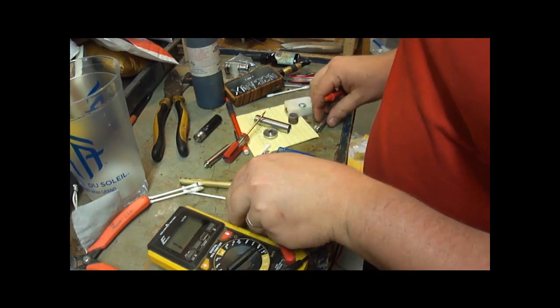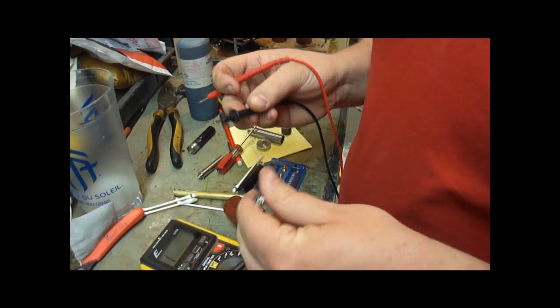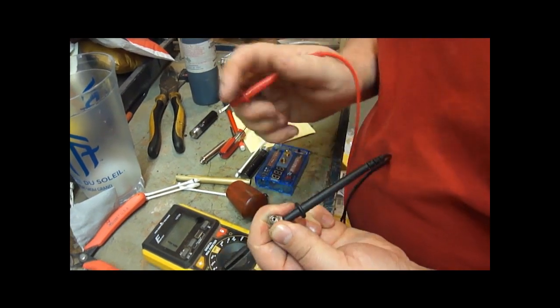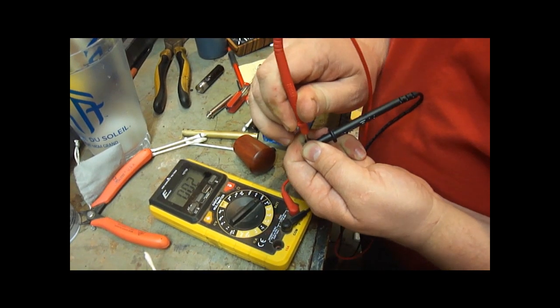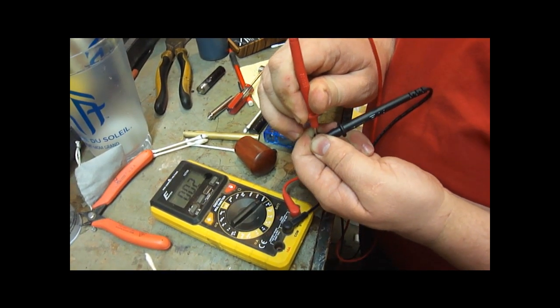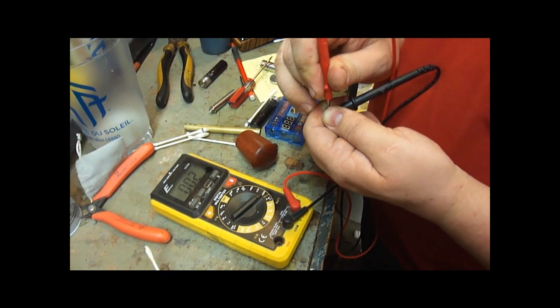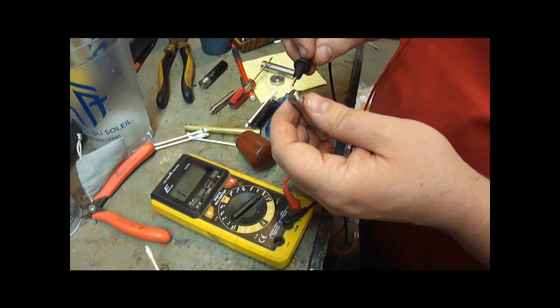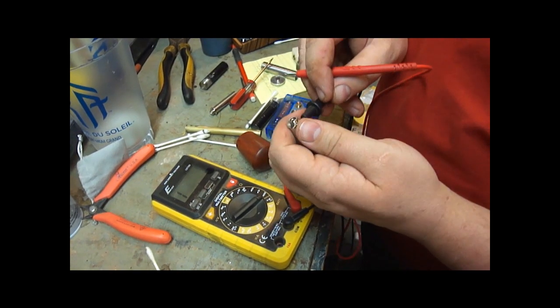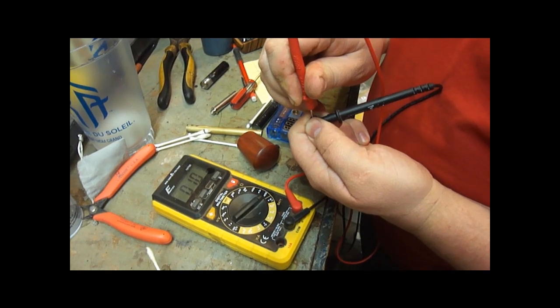Now, here's an example of one that is shorted. So I'm going to put one of the leads on the outer part of the metal and one of the leads on the center part. Now when I press in, it drops down to 2 ohms. 2 ohms is way too low. That's a dead short. And the reason I'm pressing in is because when you screw this into the pipe, it's going to put pressure on that center pin. And just the slightest bit of pressure is going to drop it down to a dead short.